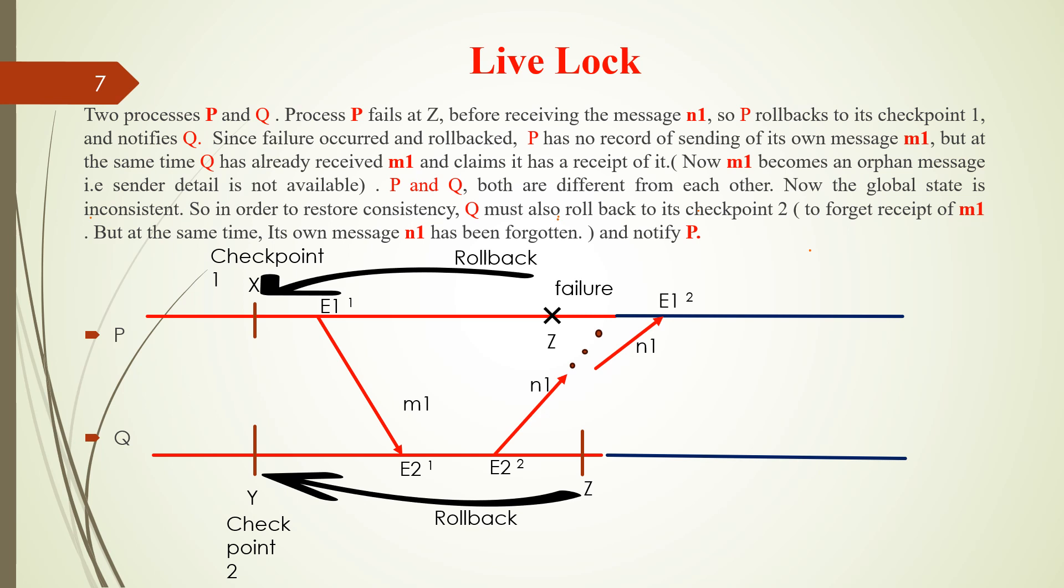So for example, two processes are running P and Q. Process P fails at Z before receiving the message N1. So P rollback to its checkpoint 1 and notifies Q. Since failure occurred and rolled back, P has no record of sending its own message M1. But at the same time, Q has already received M1 and claims it has the receipt of M1.